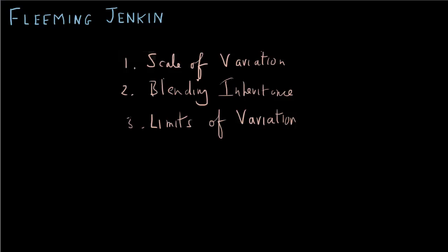We're at video 35, the eleventh on blending inheritance, and our second on Fleming-Jenkin. You'd think it would be pronounced Fleming, but in fact it is Fleming-Jenkin. In video 34 we noted how Jenkin and Darwin both distinguished small and large scale variations, but were vague as to their relative roles in evolution. Here we'll be considering Jenkin's views on blending inheritance and the limits of variation.